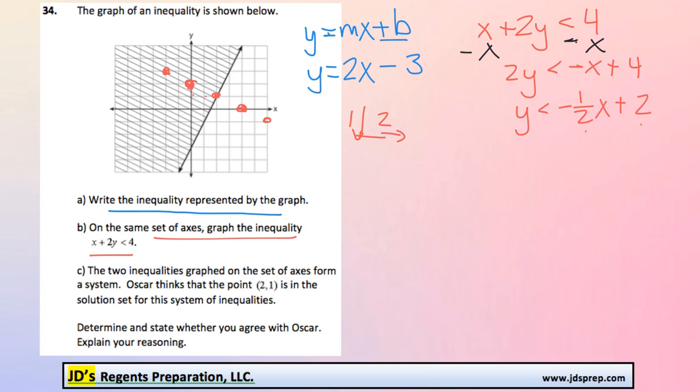Now, because it's less than and not equal to, we're not going to draw a solid line, but a dotted line going across. Okay, so anything along that line is not part of the solution set. Now, y is going to be less than this line, so we're going to highlight everything below it because it's less than.